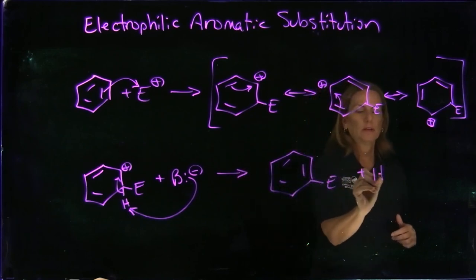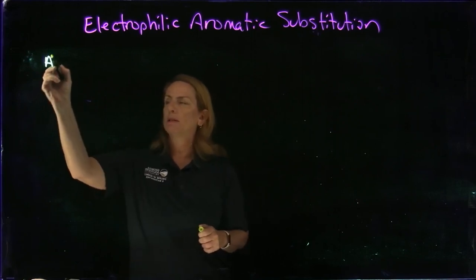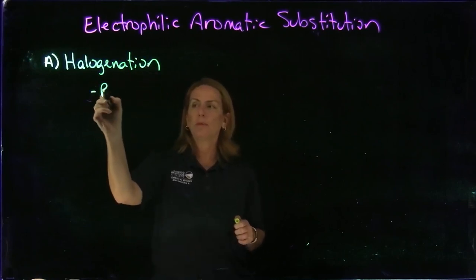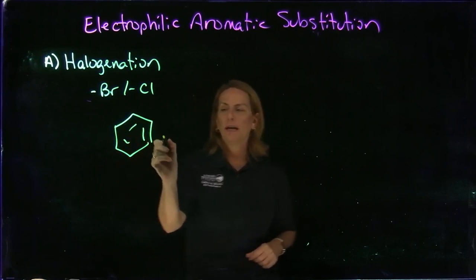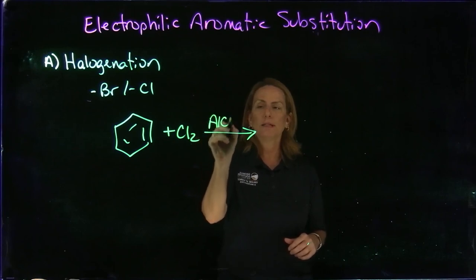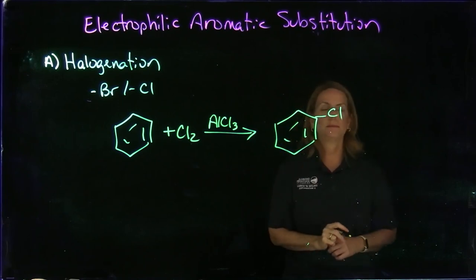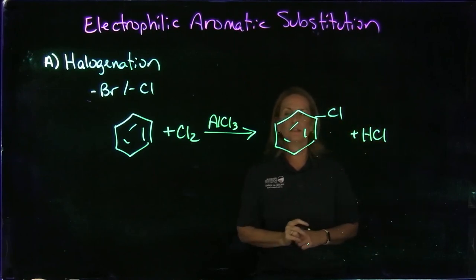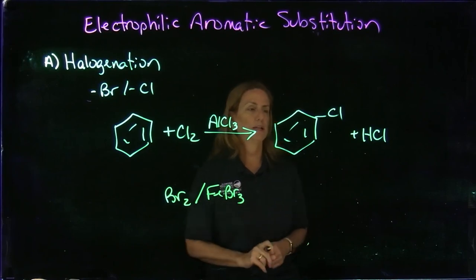The first reaction we'll talk about is called halogenation. As you can imagine, we're adding a halogen—usually bromine or chlorine. We start with benzene and add either Cl2 or Br2 with a Lewis acid catalyst like AlCl3. We're going to add a chlorine, and the other product is HCl. The AlCl3 is a catalyst. You can also add bromine; generally we add FeBr3 as the catalyst to get that reaction to go.